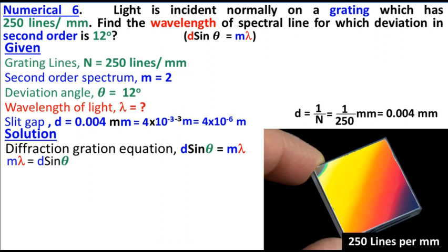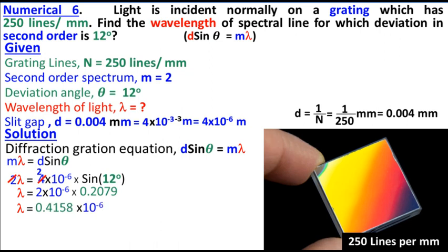Now using the diffraction grating equation d sin theta equals m lambda. So 4 into 10 to the minus 6 times sin of 12 degrees equals 2 lambda. The 2 cancels from both sides, so lambda equals 2 into 10 to the minus 6 times sin 12, which is 0.2079 from calculator.